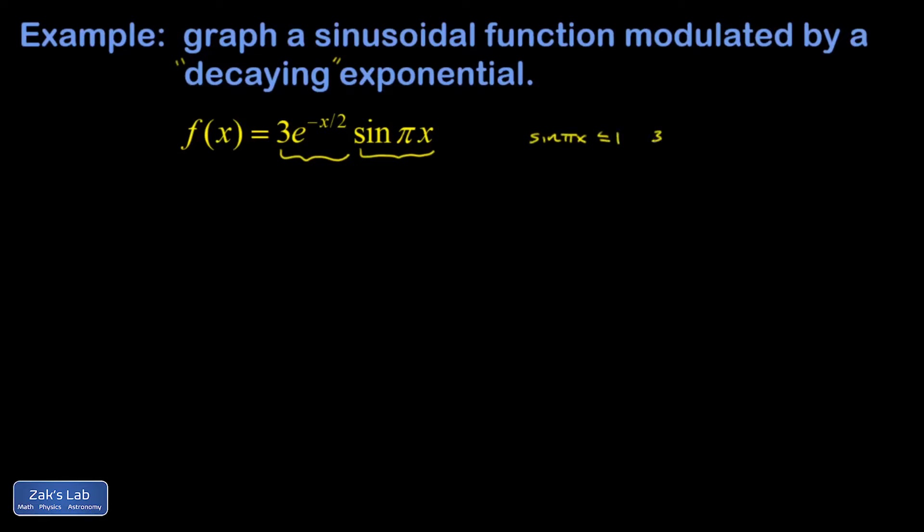Well, that means our original function f must be less than or equal to what I get when I replace sine pi x with 1, so it's less than or equal to this function, 3e to the negative x over 2.